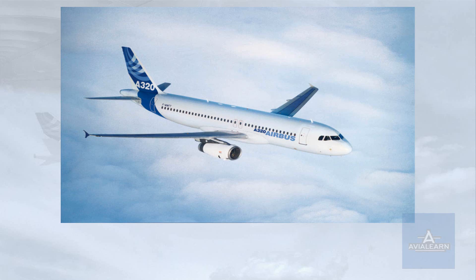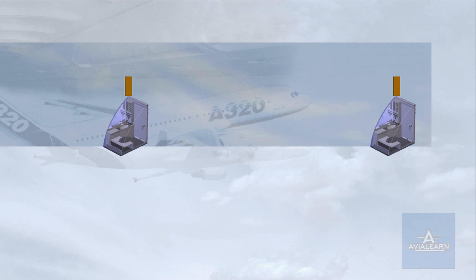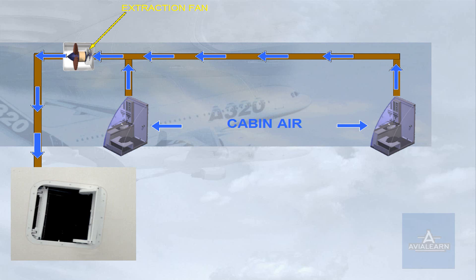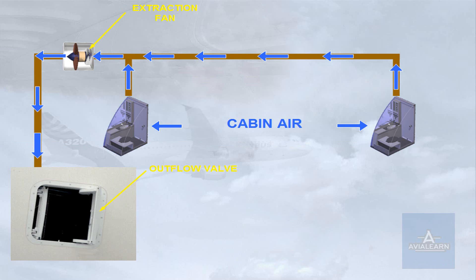On the A320, there are two ventilation systems: the lavatory and galley system, and the avionics system. The lavatory and galley system is fully automatic. Cabin air is passed through the lavatory and galley areas and is removed by an extraction fan. This fan pulls air into an extraction duct and then releases it overboard through the outflow valve. The extraction fan runs continuously provided electrical power is available. There are no controls or indications associated with the lavatory and galley ventilation system.